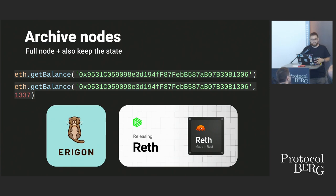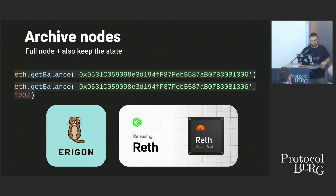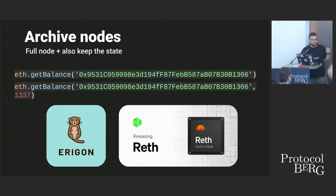Archive nodes are the most powerful. They are like full nodes but also keep the full state of the chain, so you can query your ETH balance at any specific block. They don't lose anything and can reproduce the state of the chain at any point in time. For geth, running an archive node is not really feasible. There are implementations like Erigon, which runs an archive node in about 2.2 terabytes, and Reth, built in Rust by the Paradigm team, which provides similar results.